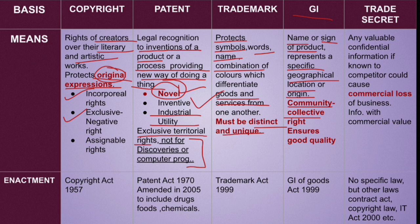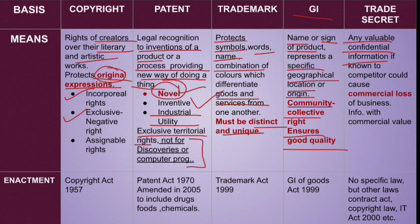These geographical indications ensure good quality, as I told you. Moving ahead to trade secrets — any valuable confidential information. It should have commercial value, and it should be secretive. It is any type of information that, if known to a competitor, could cause commercial loss to your business, because then they could also create the same product and your unique selling proposition would be gone, causing you commercial loss.